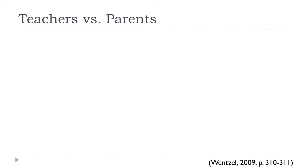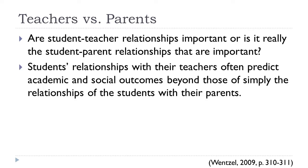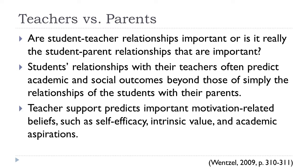In all three theoretical perspectives — attachment theory, social support perspectives, and self-determination theory — the student-teacher relationship is considered important. Some have thought that perhaps the parent-child relationship mattered more, but researchers have found that students' relationships with their teachers often predict academic and social outcomes beyond those of simply relationships with parents. Researchers have also found that teacher support predicts important motivation-related beliefs, such as self-efficacy, intrinsic value, and academic aspirations.